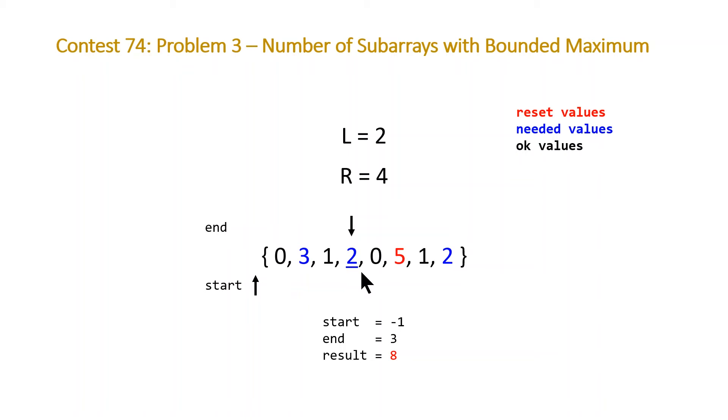This is adding the 0, 3, 1, 2, which is a subarray, then the 3, 1, 2, which is another subarray, the 1, 2, and then the 2. You can see now because our prefix has been extended by the resetting of our end, we're adding more subarrays.